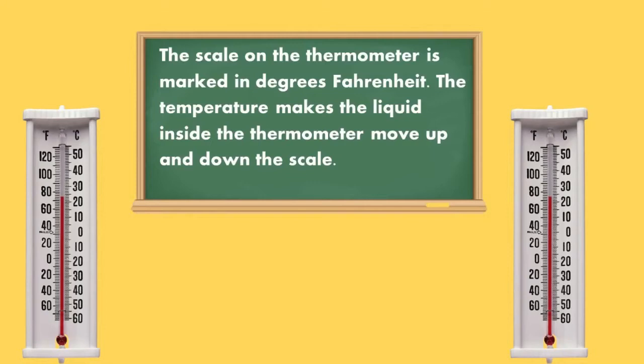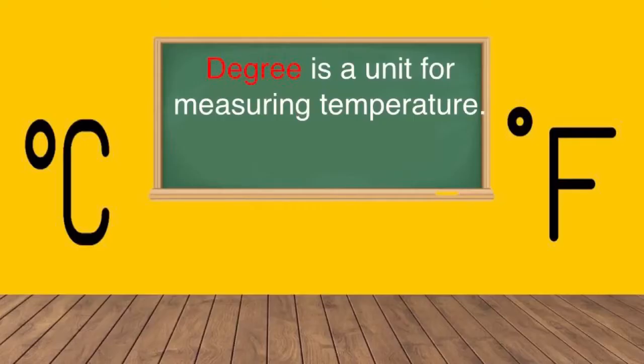The scale on the thermometer is marked in degrees Fahrenheit and Celsius. The temperature makes the liquid inside the thermometer move up and down the scale. A degree is a unit for measuring temperature.